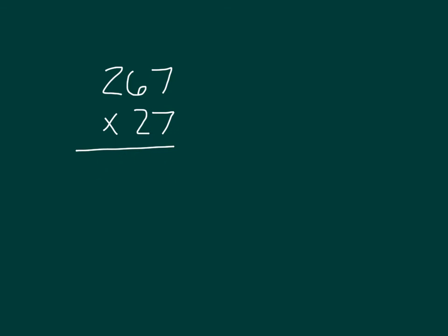However, in this lesson, we're using estimated products. And in this example, we'll go ahead and estimate to the nearest tens place. To estimate to the nearest tens place, we will round each of these factors. 267 rounds to 270, and 27 nearest tens place goes to 30.